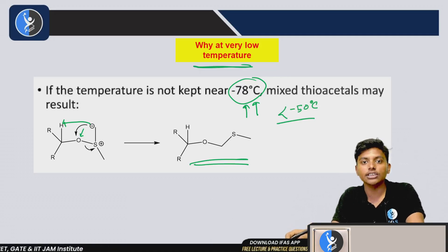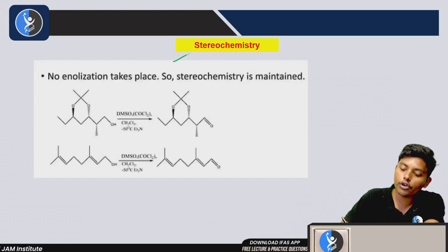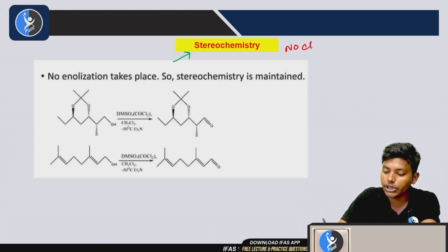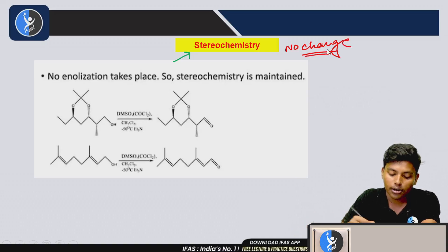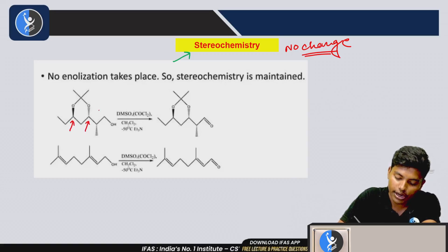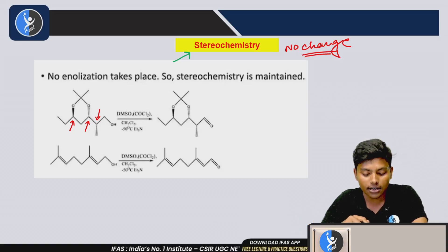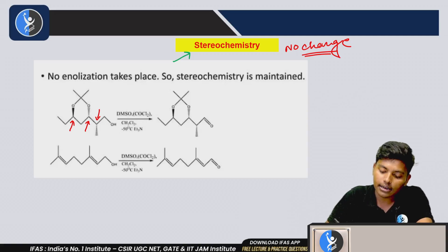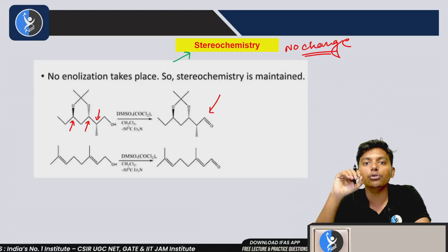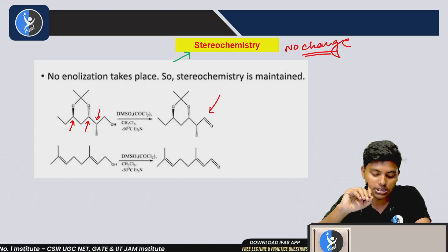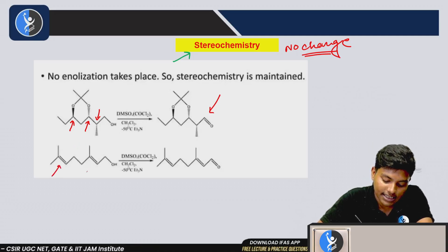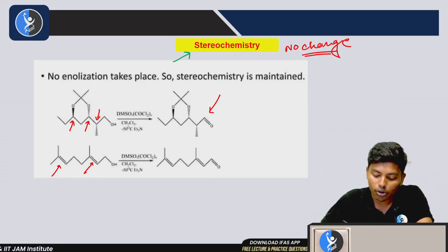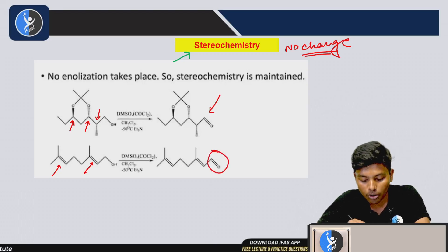Regarding stereochemistry of the product: there is no change in the stereochemistry of the reactant in the product. If the reactant has a chiral center, because no racemization takes place in the final step, the final product will have no change in stereochemistry at the chiral center. Similarly, if there is E/Z geometrical isomerism present, it will also not change in the final product.